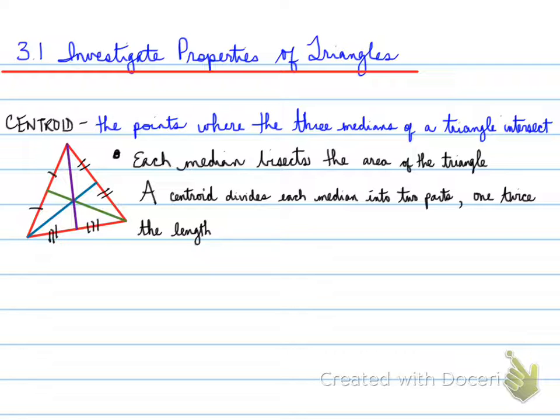A centroid divides each median into two parts. One is twice the length of the other. So right here, this line is twice as long as this little line, and the same for this. This line is twice as long as this little line, and the same for the purple. So one is twice the length of the other.